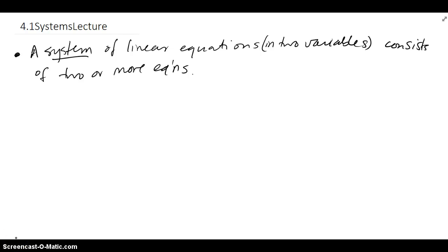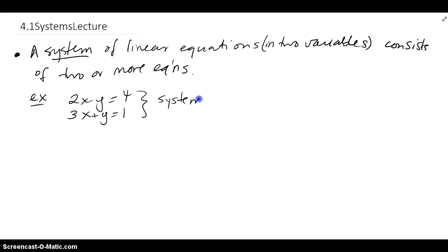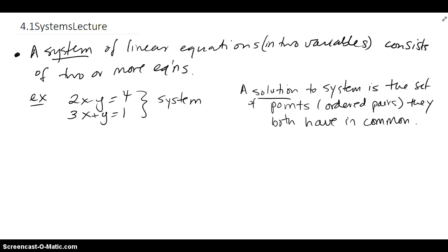A system of linear equations in two variables consists of two or more equations. We're going to start off with looking at systems that contain only two equations. For example, these two equations create a system. A solution to a system is a set of all points or ordered pairs that they both have in common.